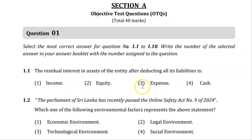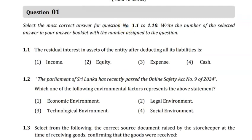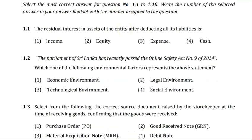The instructions say: select the most correct answer for questions 1.1 to 1.10, and write the number of the selected answer in your answer booklet with the number assigned to the question. You have to follow these instructions very carefully in the real exam. For this past paper discussion, we won't be following that format since this is a past paper review.